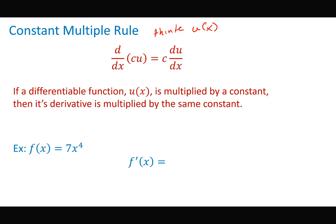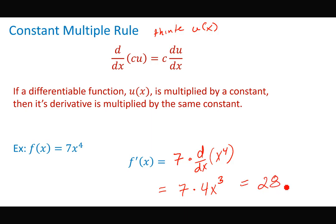So if I had the function 7x to the fourth, the constant multiple rule says I can bring the 7 out and then I'm only finding the derivative of x to the fourth. The derivative of x to the fourth is 4x cubed — bring the 4 out front, subtract 1 from the exponent. So now I have 7 times 4x cubed, so my final derivative would be 28x cubed.